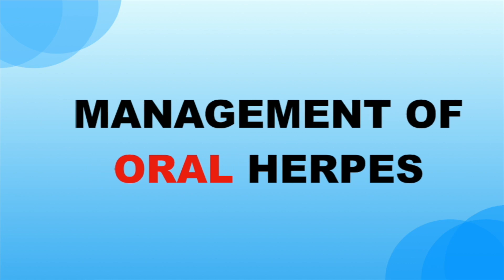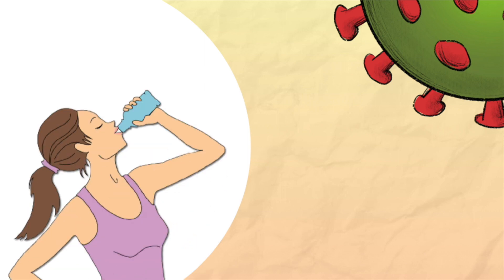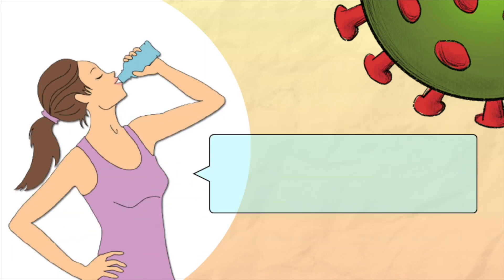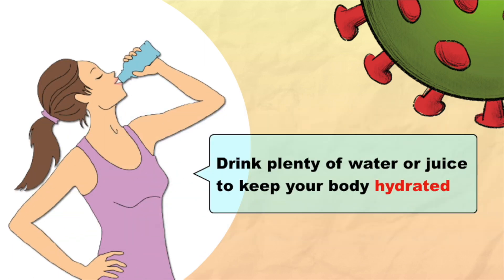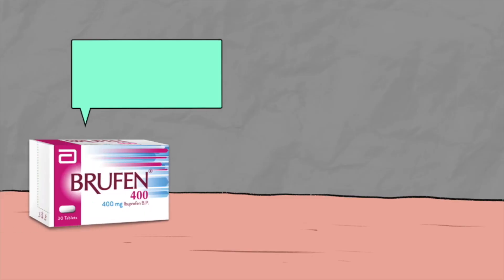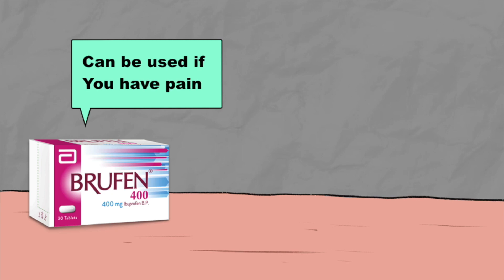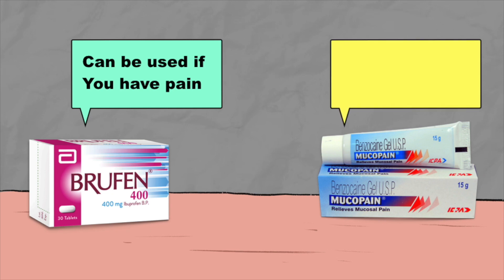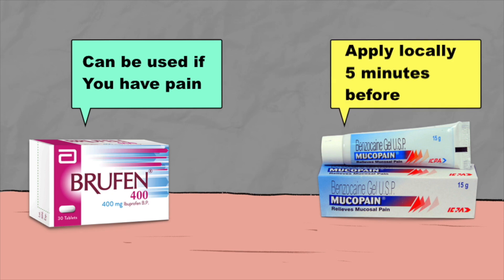First let's discuss oral herpes management. During the infective period, the first thing you should take care of is proper hydration — drink plenty of water or juice to keep your body hydrated. If you are having pain and fever, you can take over-the-counter medications like ibuprofen or simple paracetamol. You can also apply mucopin gel locally 5 minutes before a meal, which will reduce pain and discomfort.